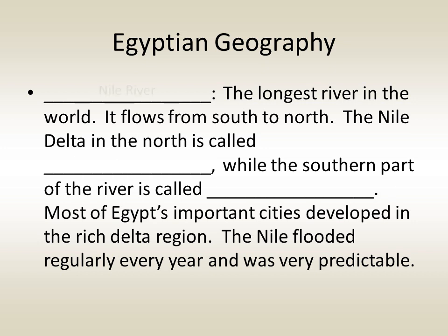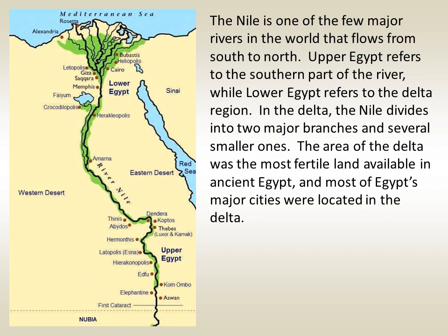The Nile River is the longest river in the world. Unusually, it flows from south to north. The Nile Delta in the north is called Lower Egypt, while the southern part of the river is called Upper Egypt. Most of Egypt's important cities developed in the rich Delta region, where the Nile divides into two major branches and several smaller ones. The Nile flooded regularly and very predictably every year.